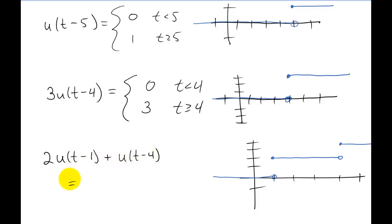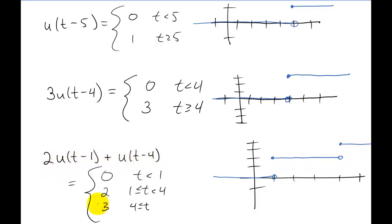Let me restate that clearly. When t is less than one, both step functions are off — function value is zero. When t is between one and four, the first step function turns on and the second is still off — two times one plus zero gives two. When t is bigger than four, both step functions turn on — two times one plus one gives three. Written as a piecewise function: zero, then jumps to two at t equals one, then jumps to three at t equals four. Each step function represents a jump at the t value in its argument, and the size of the jump is given by the coefficient in front of the step function.